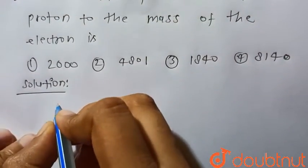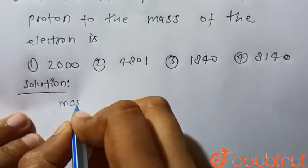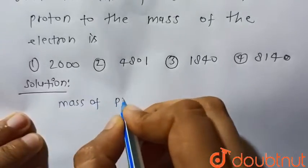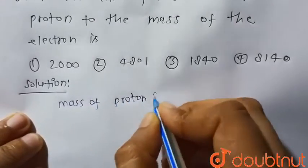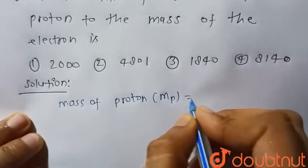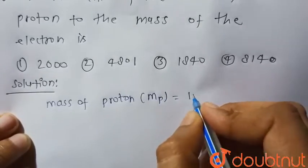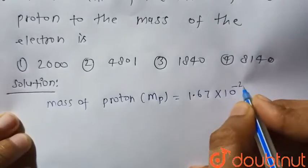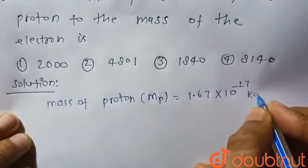We know that mass of proton, let's say Mp, is equal to 1.67 × 10^-27 kg.